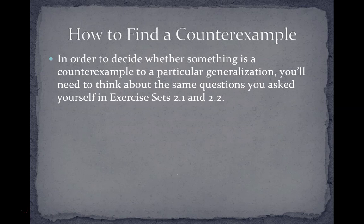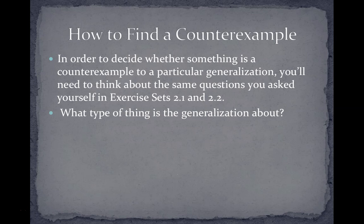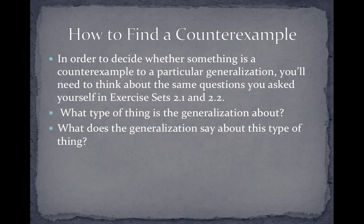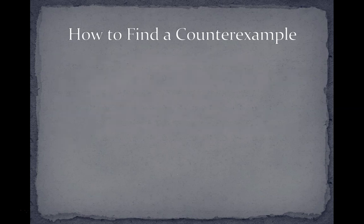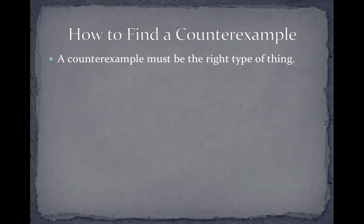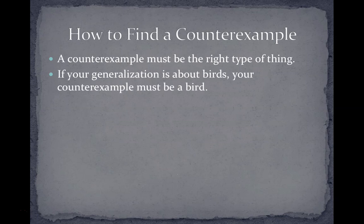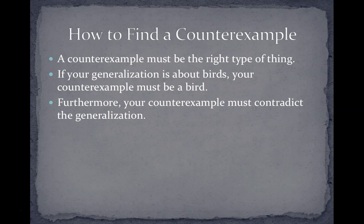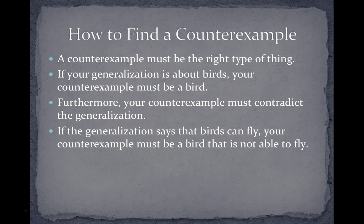In order to decide whether something is a counter-example to a particular generalization, you'll need to think about the same questions you asked yourself in Exercise Sets 2.1 and 2.2. What type of things is the generalization about? What does the generalization say about this type of thing? A counter-example must be the right type of thing. If your generalization is about birds, your counter-example must be a bird. Furthermore, your counter-example must contradict the generalization. If the generalization says that birds can fly, your counter-example must be a bird that is not able to fly.